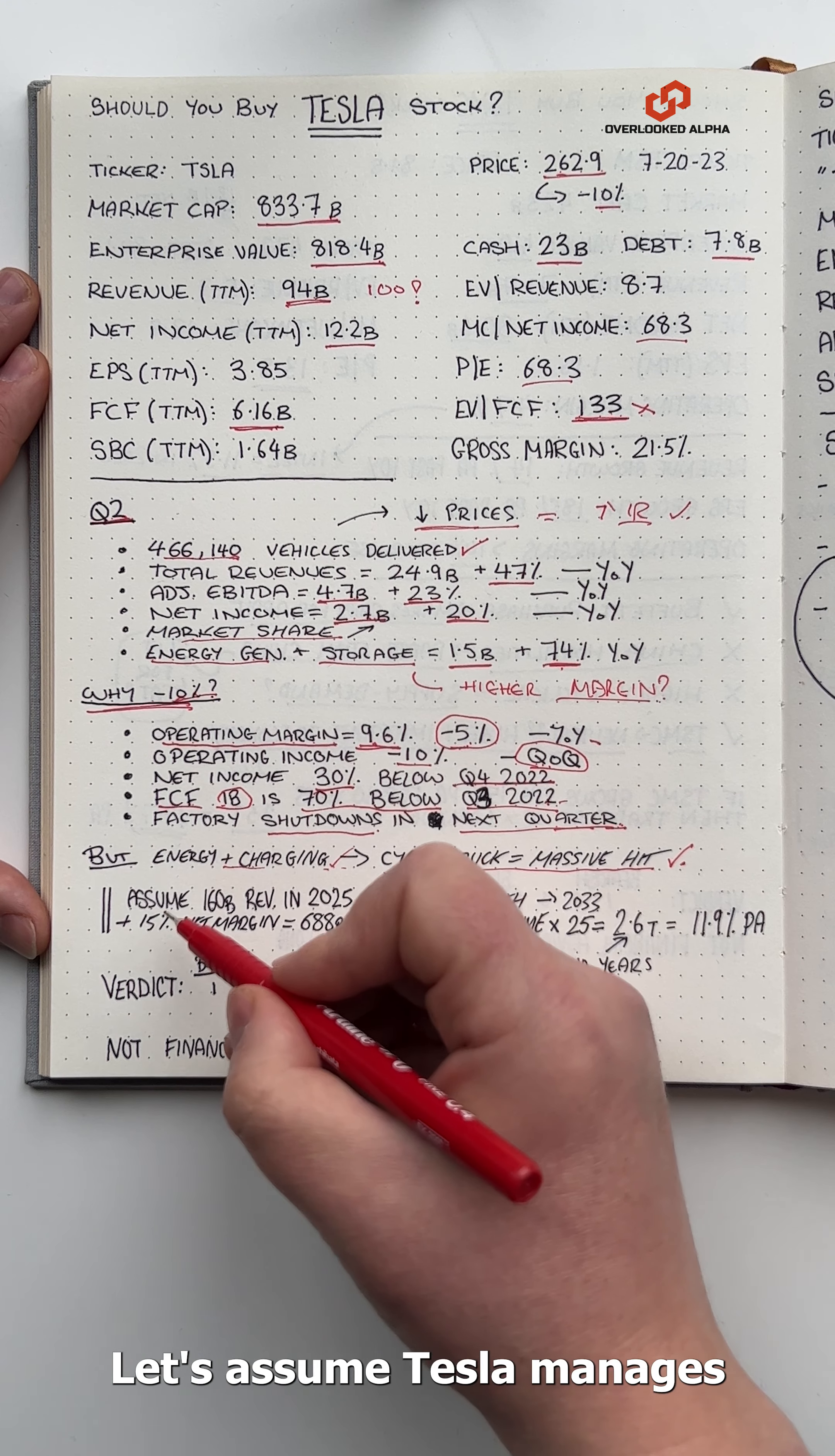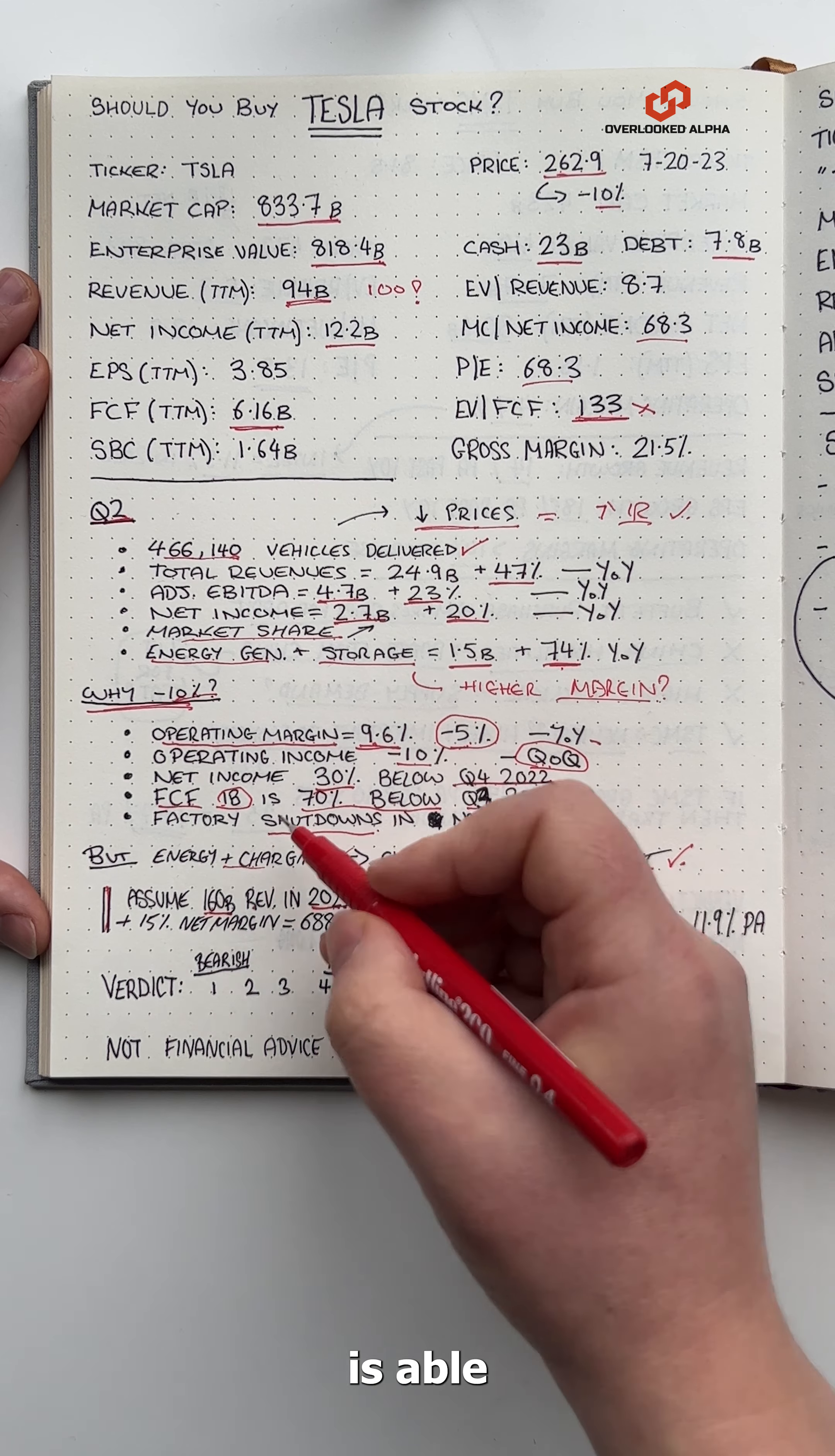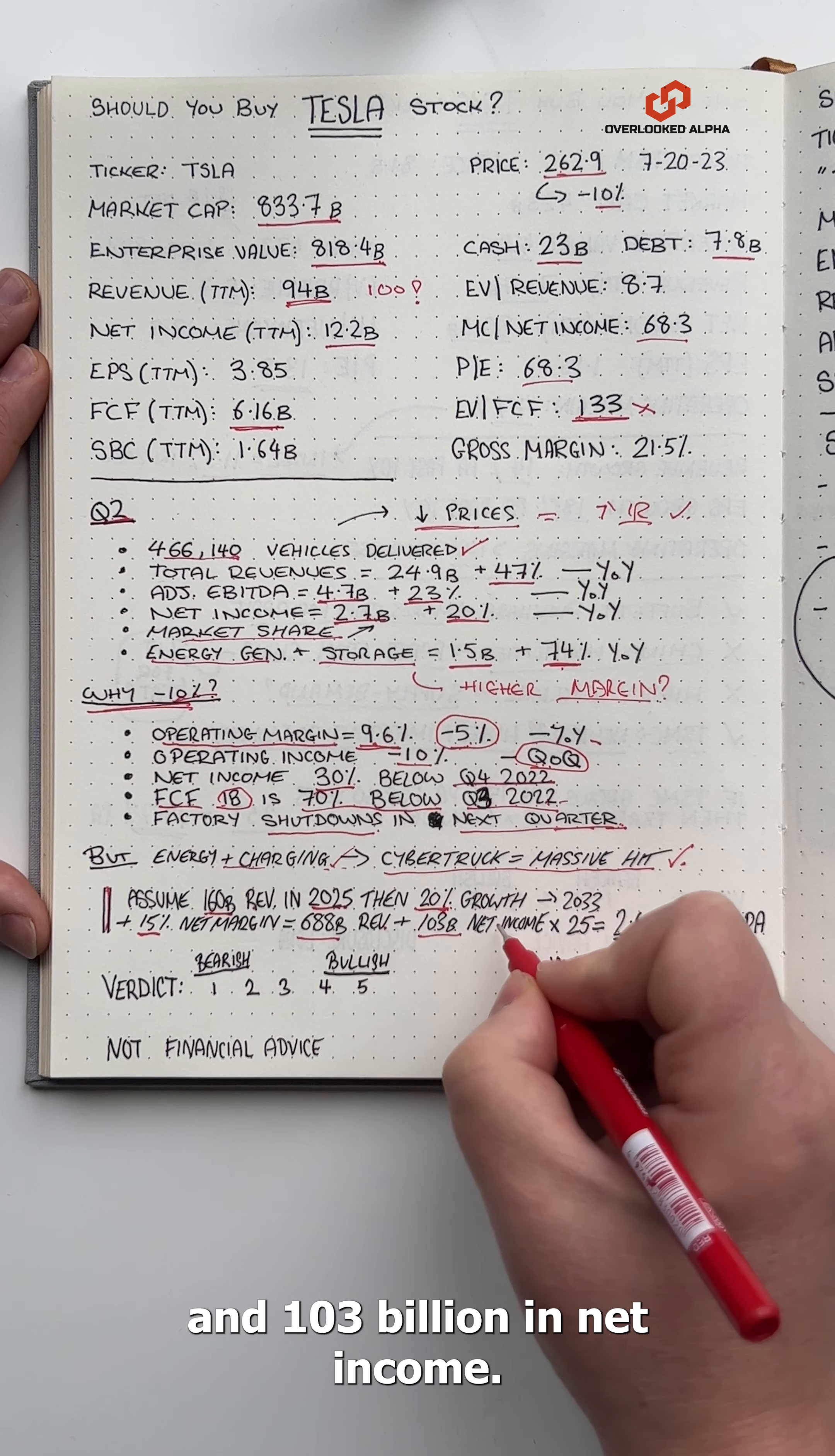Let's assume Tesla manages to hit analyst targets of $160 billion in revenue in 2025 and then continues to compound revenues at 20% a year. Then let's assume the company is able to operate at a 15% net income margin in 10 years time.